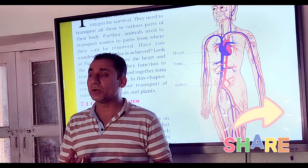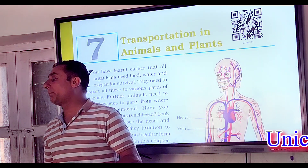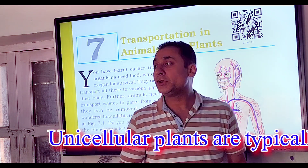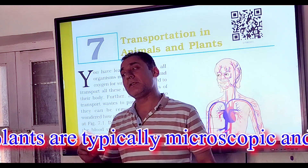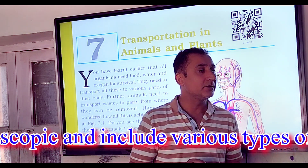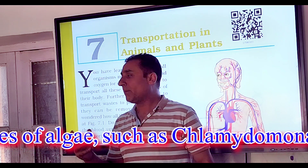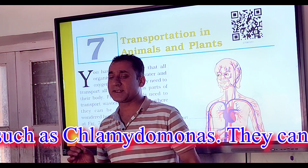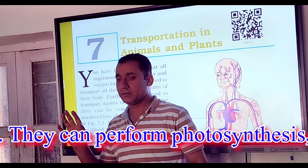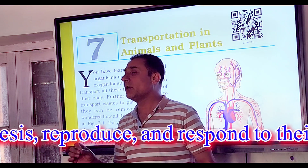Unicellular organisms — how are they taking their food? Unicellular means which plants? جو ایک سیل کے بنے ہوئے ہیں — those made of one cell. And multicellular means جو بہت سارے سیل کے بنے ہوئے ہیں — those made of many cells.